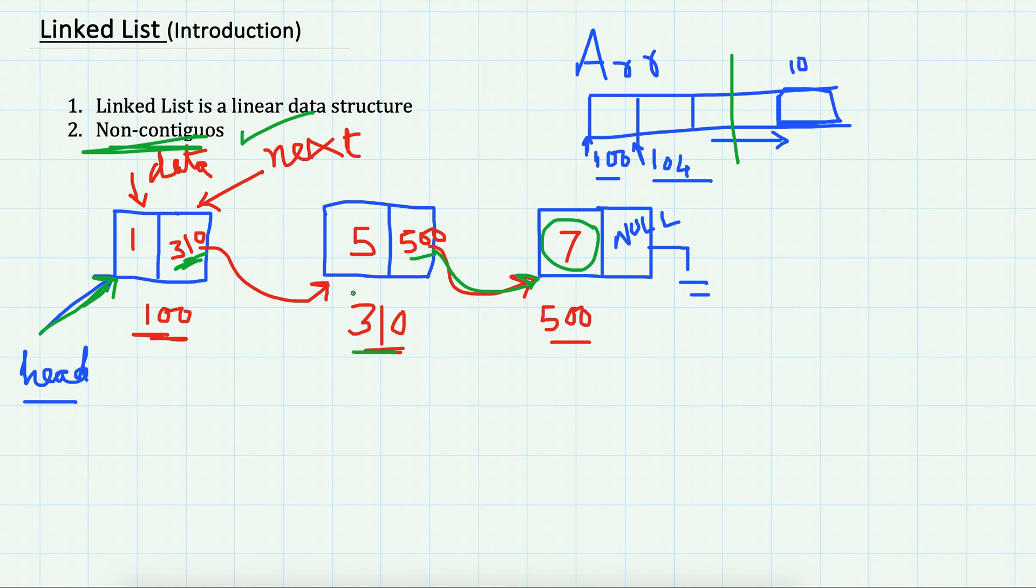the next node. We also have a concept of doubly linked list, where we have not just the next node but also the previous node—one value and two addresses. Then we have the concept of circular linked list. We will see these in the upcoming videos. Thanks for watching.